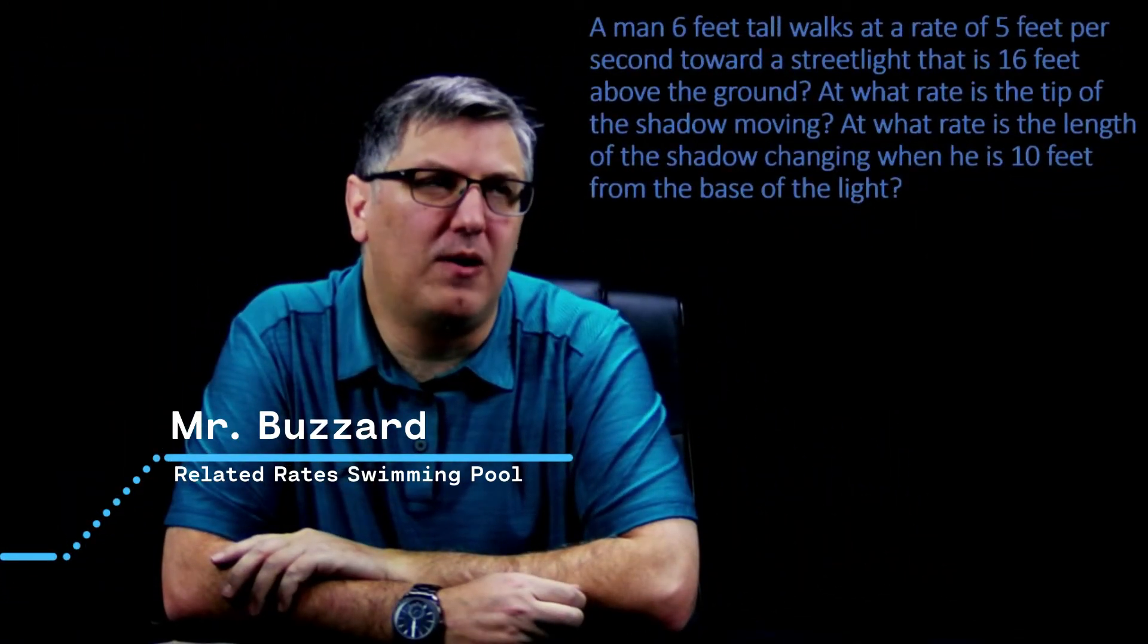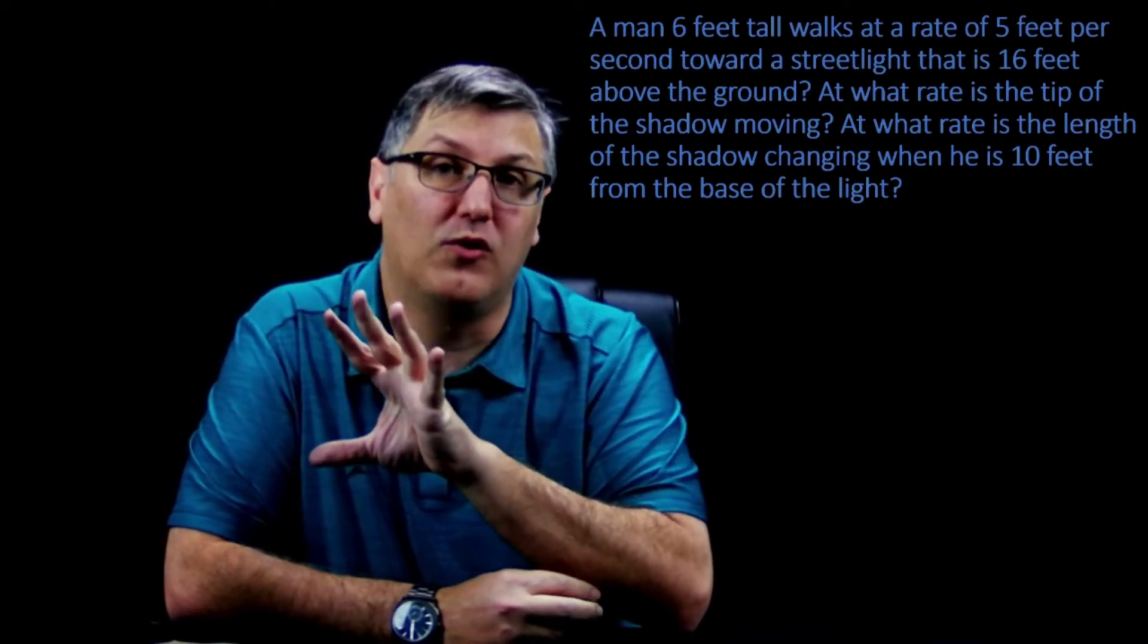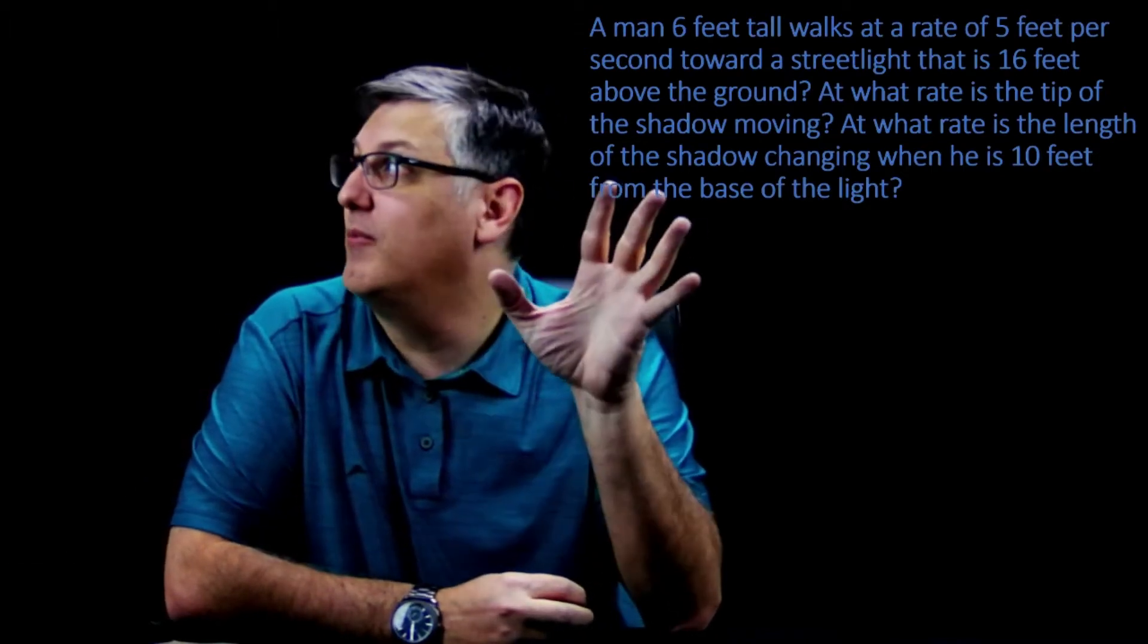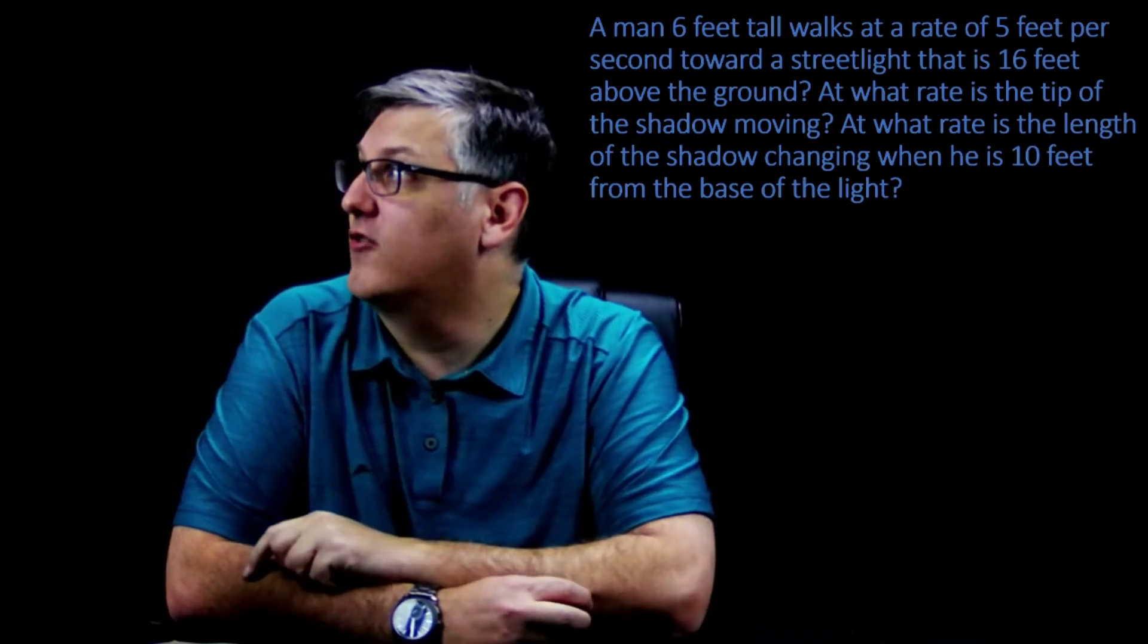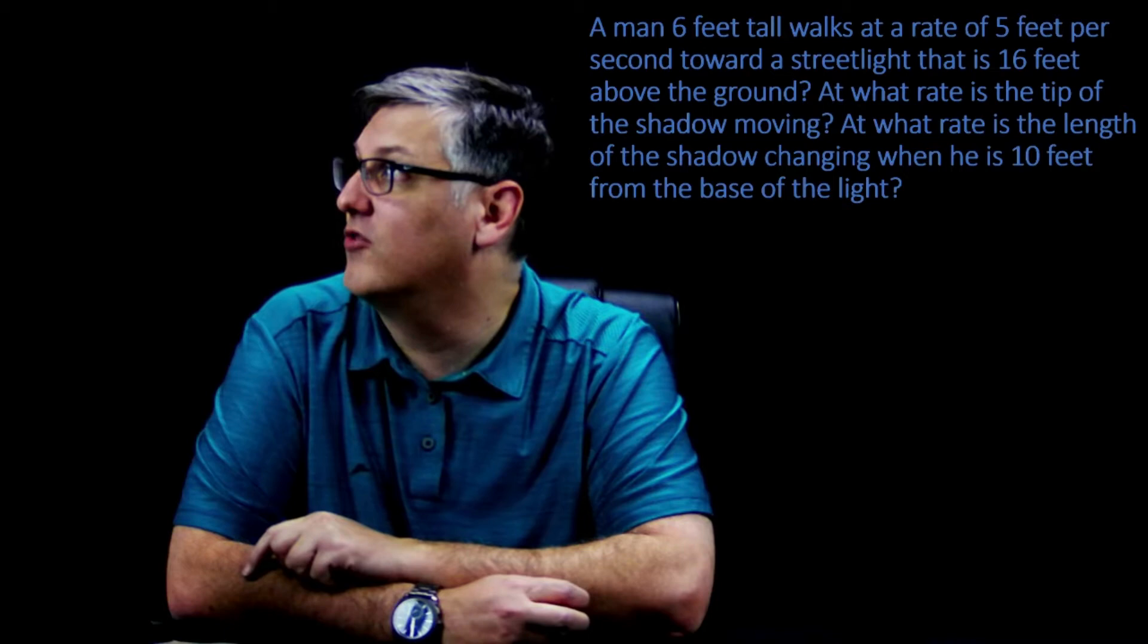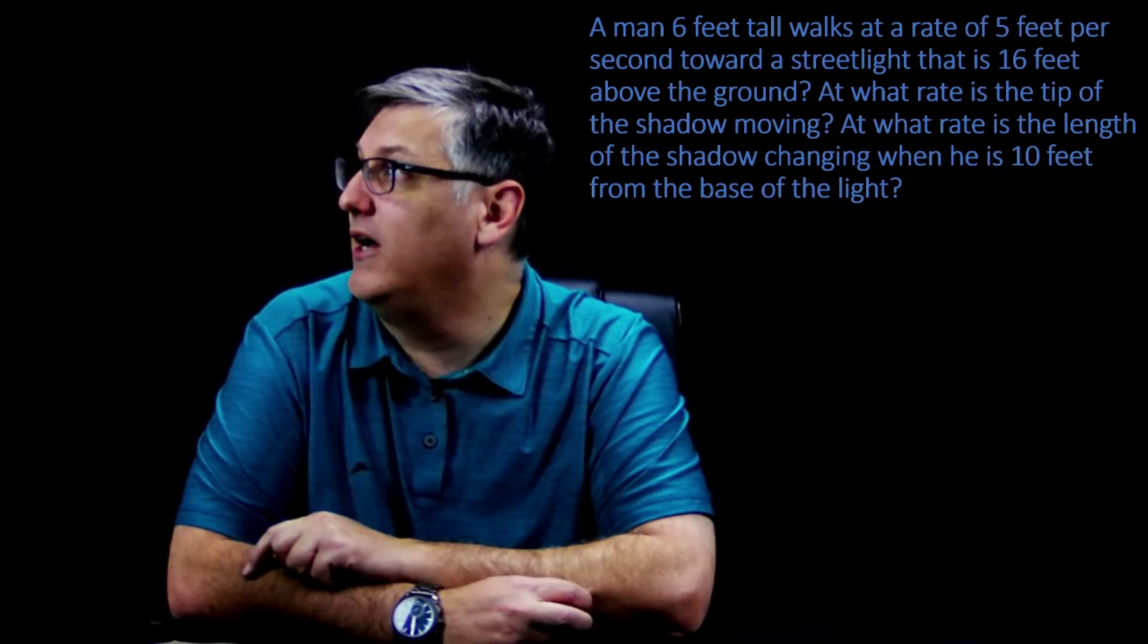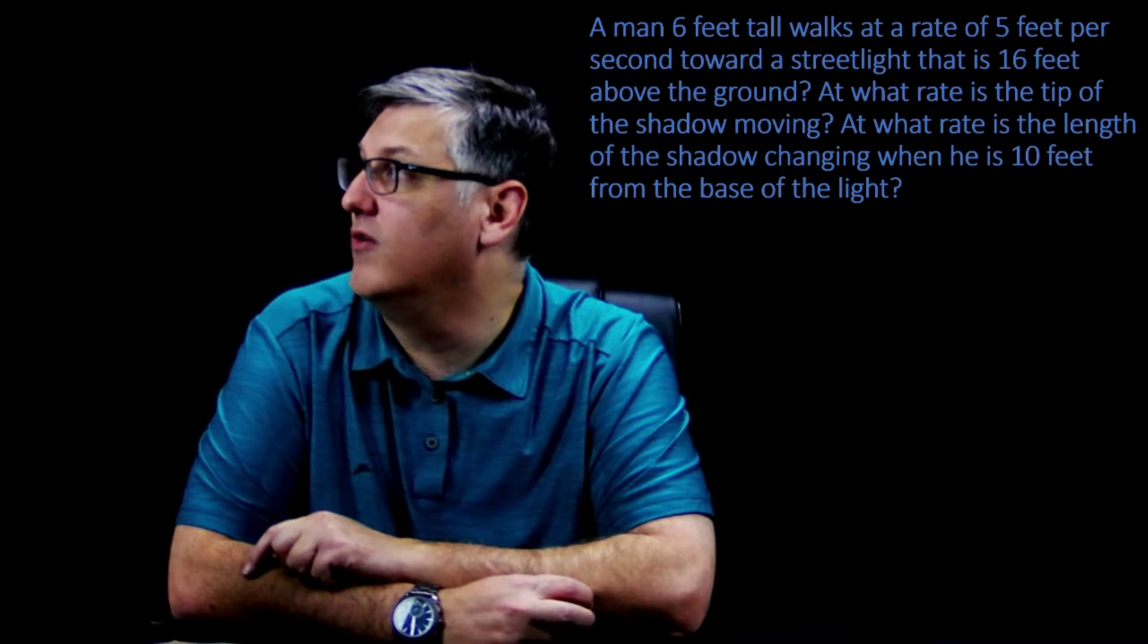All right, so let's work another problem. This one's going to be another similar triangle problem because usually they're confusing for a lot of people. The problem here is: a man six feet tall walks at a rate of five feet per second towards a street light that is 16 feet above the ground. At what rate is the tip of the shadow moving, and at what rate is the length of the shadow changing when he is 10 feet from the base?